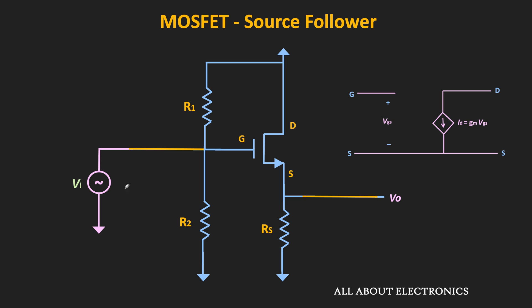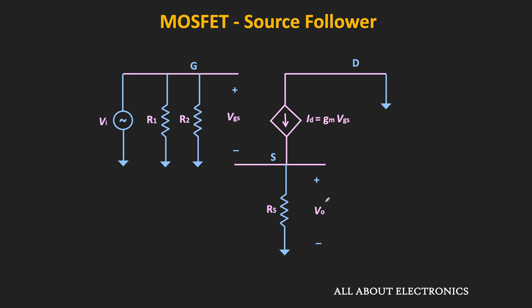If you observe, the input signal is appearing between the gate and the ground terminal. Since the drain terminal is at AC ground, these two resistors R1 and R2 will appear between the gate and the ground terminal, and this source resistor is appearing between the source and the ground terminal. If you see the small signal equivalent circuit, it will look like this. For this circuit, let us find the input impedance, the output impedance, and the voltage gain.